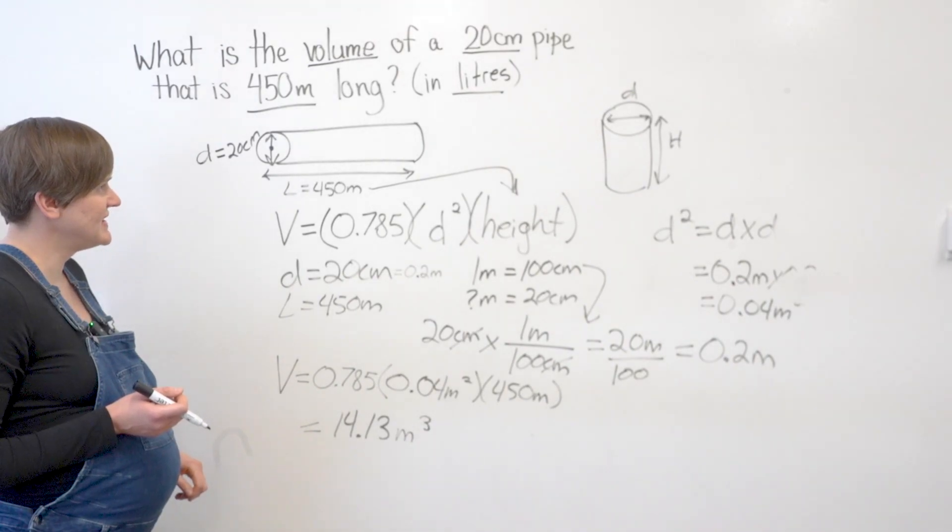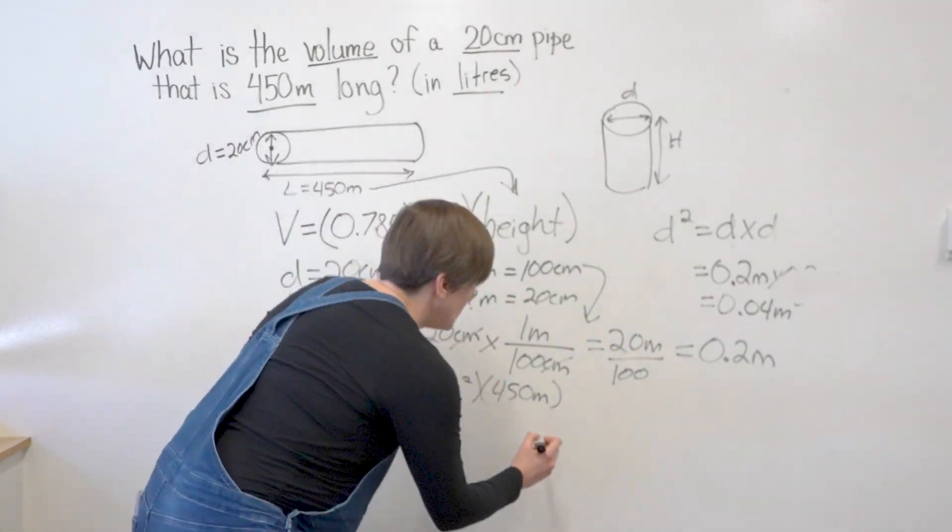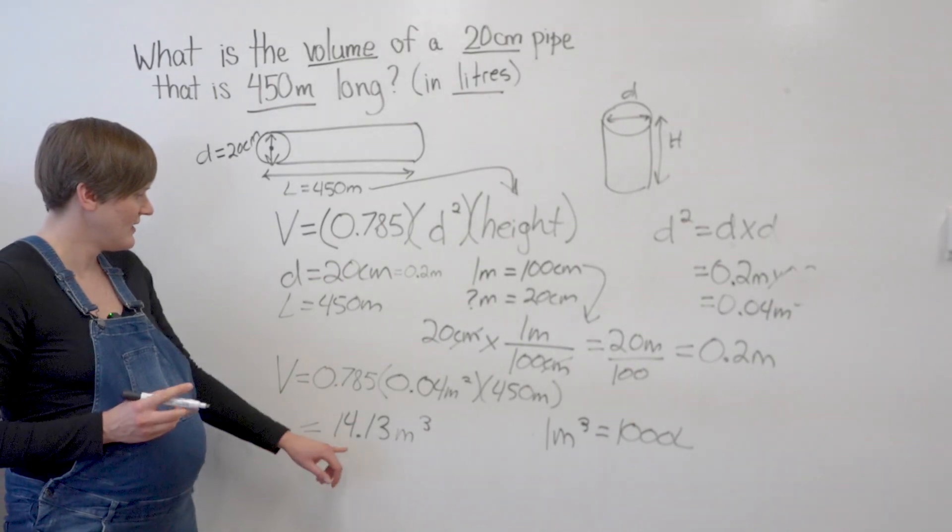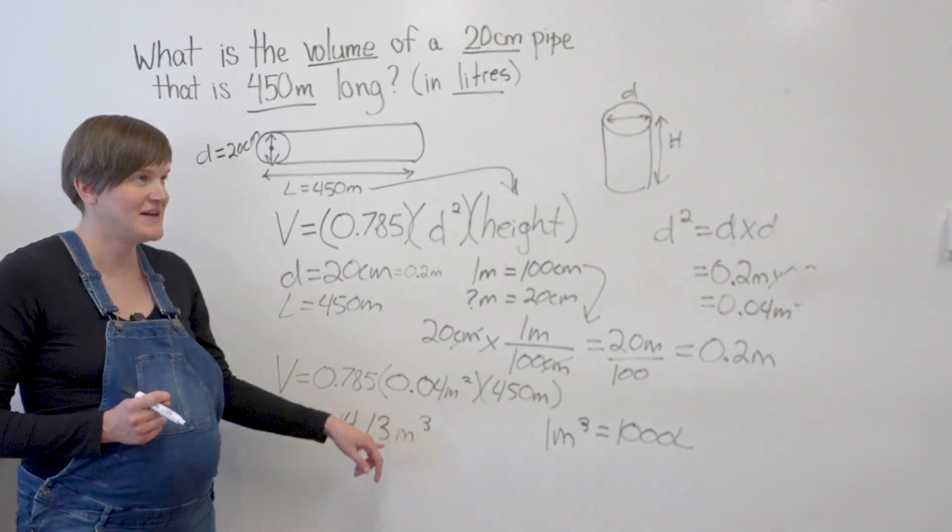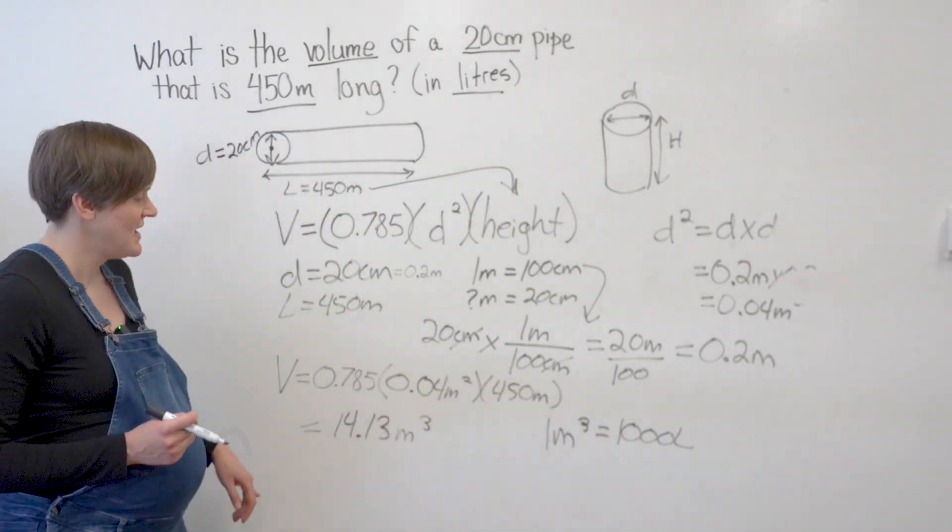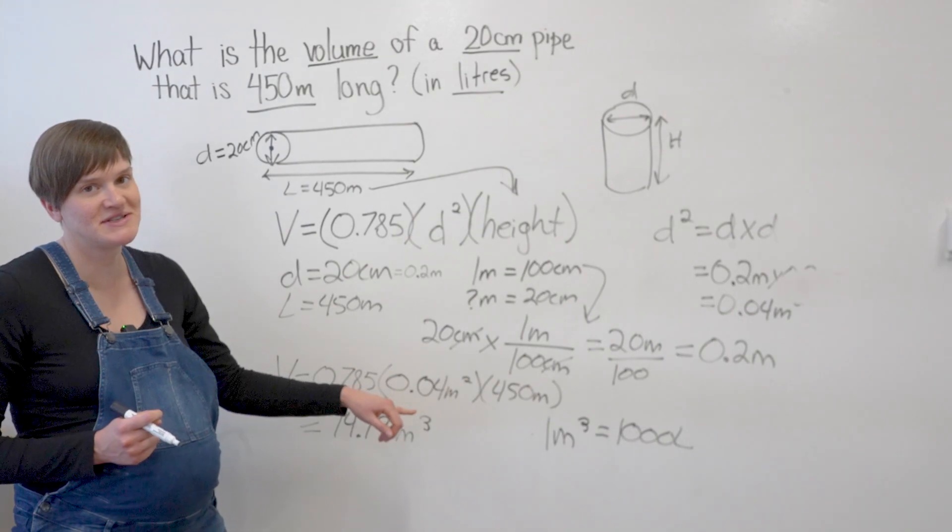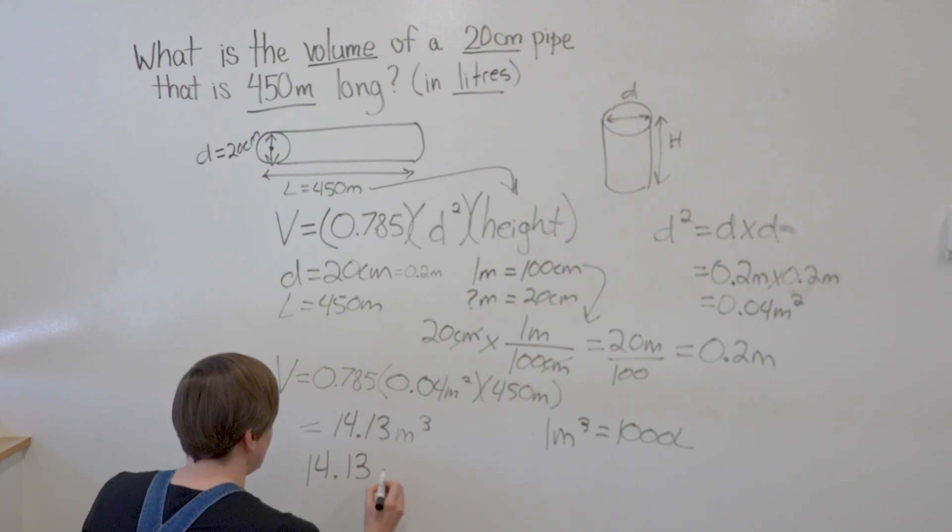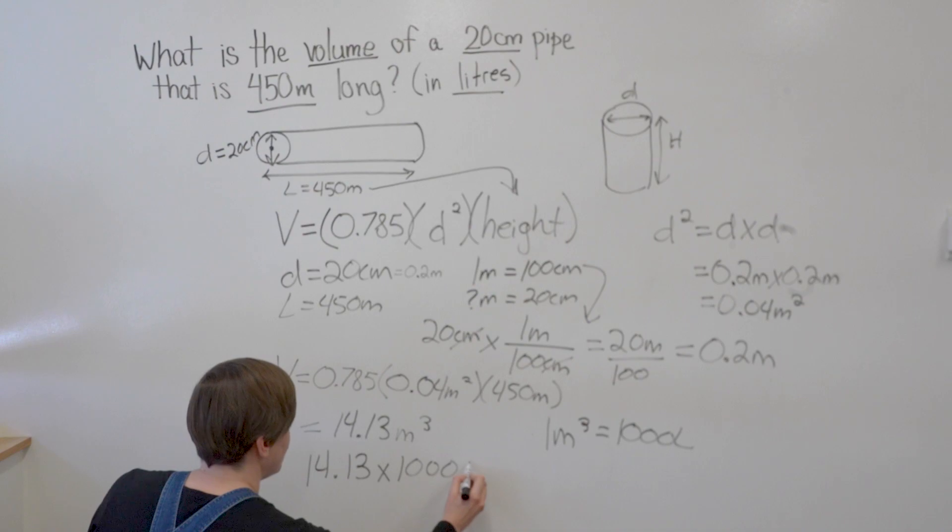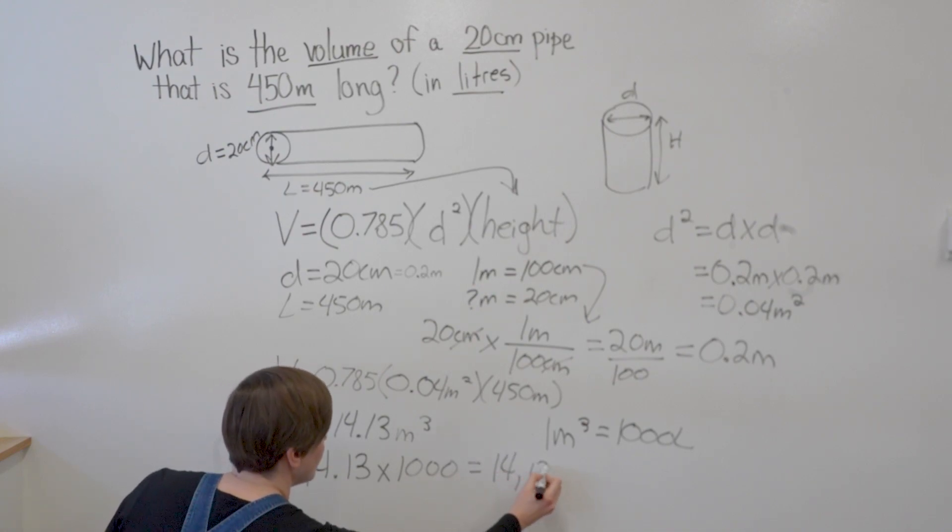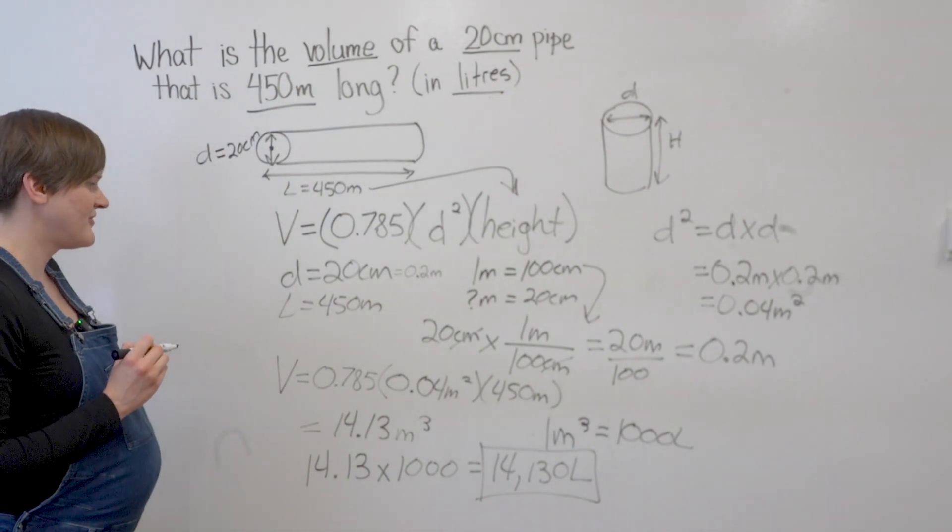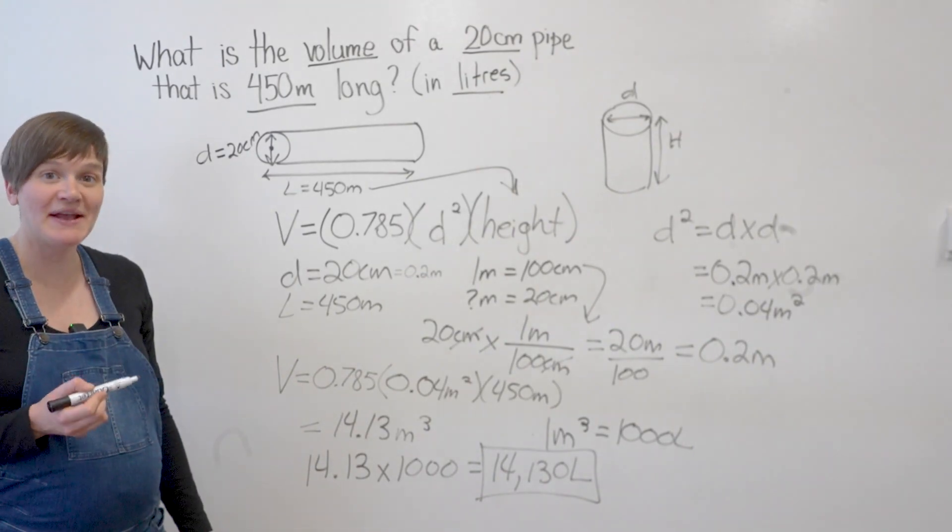So on your formula sheet, it states that 1 cubic meter of water is 1,000 liters. I've got 14.13 cubic meters. So for every one of those, it's going to be 1,000 liters. So I'm going to multiply this answer by 1,000 to get my answer in liters. So 14.13 times 1,000 gives me 14,130 liters. And that is my final answer.